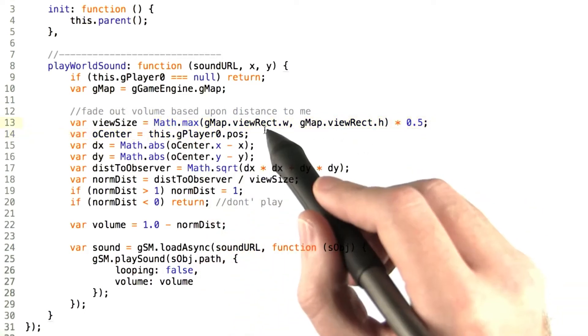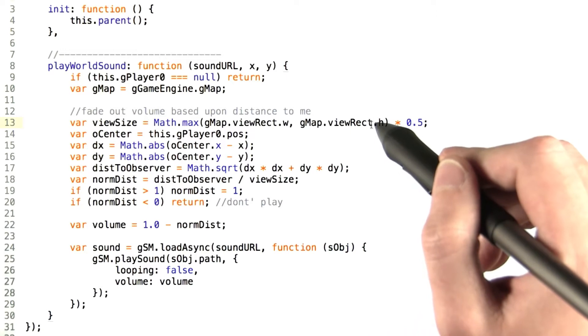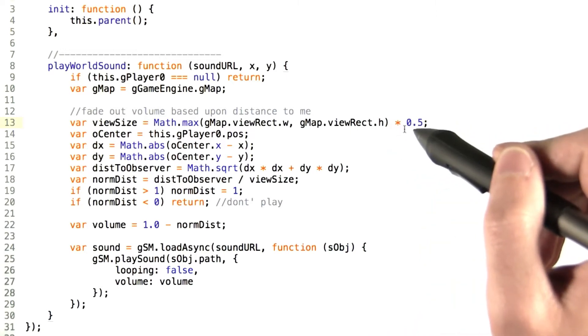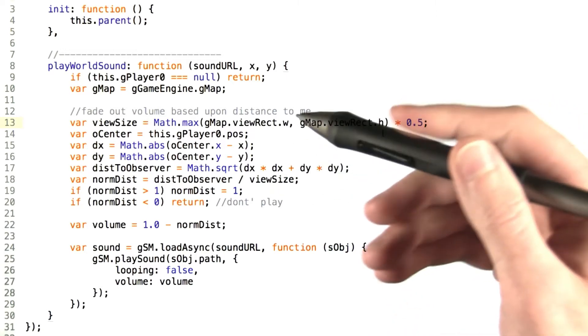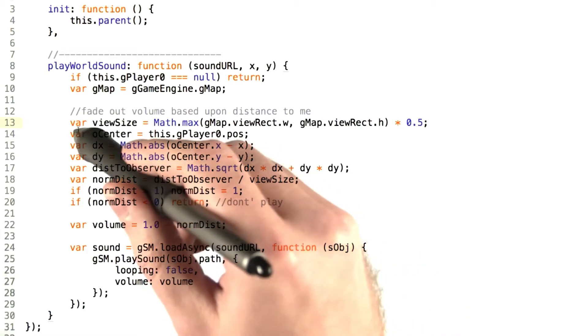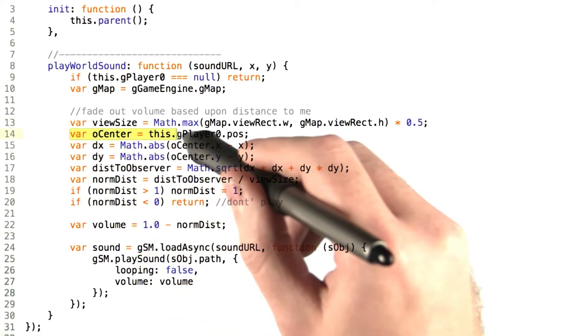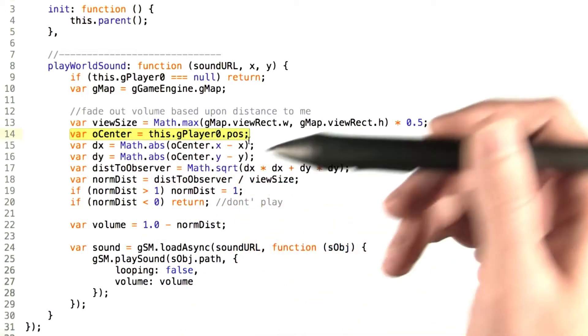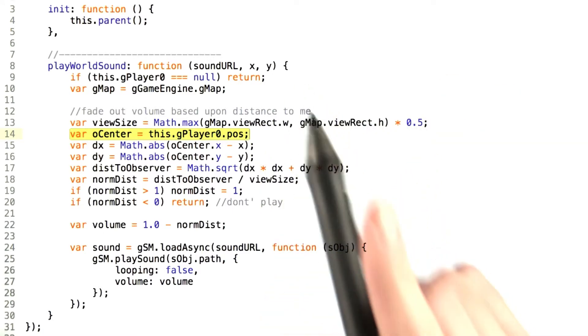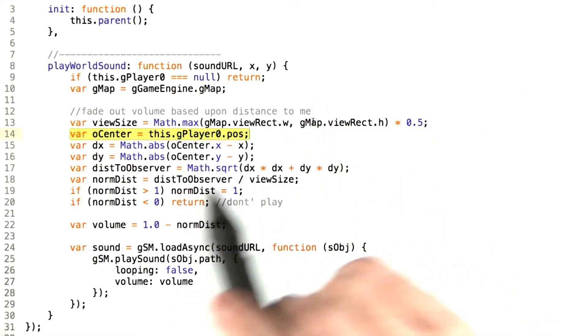We take the maximum of the width and the height, then multiply it by a half. We don't want the full width, we only want the half, since we're going to set the center of that view size to be the player's current position, and we want the distance from the player to the sound.